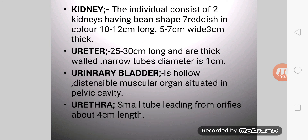The kidney — each individual consists of two kidneys, bean-shaped and reddish in color, 10 to 12 cm long, 5 to 7 cm wide, and 3 cm thick. The ureter is 25 to 30 cm long; its diameter is 1 cm. The urinary bladder is a hollow, distensible muscular organ situated in the pelvic cavity. The urethra is a small tube leading from the bladder orifice, about 4 cm in length.